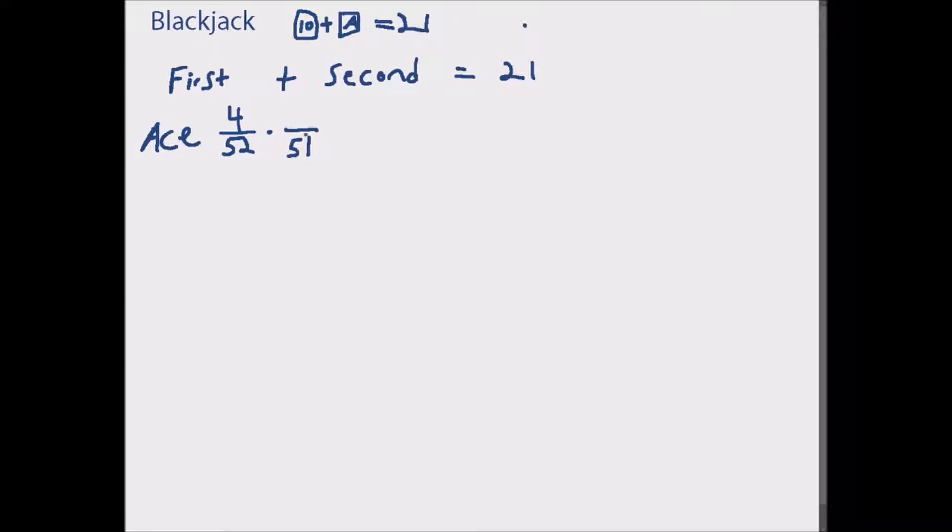We multiply that by the probability of getting a card worth 10. There are only 51 cards left because your first card was an ace. The cards 10, jack, queen, and king are all worth 10 points - that's four cards in four suits, so there are 16 cards worth 10. If you multiply that out you get 64 divided by 2652, which equals 0.024.